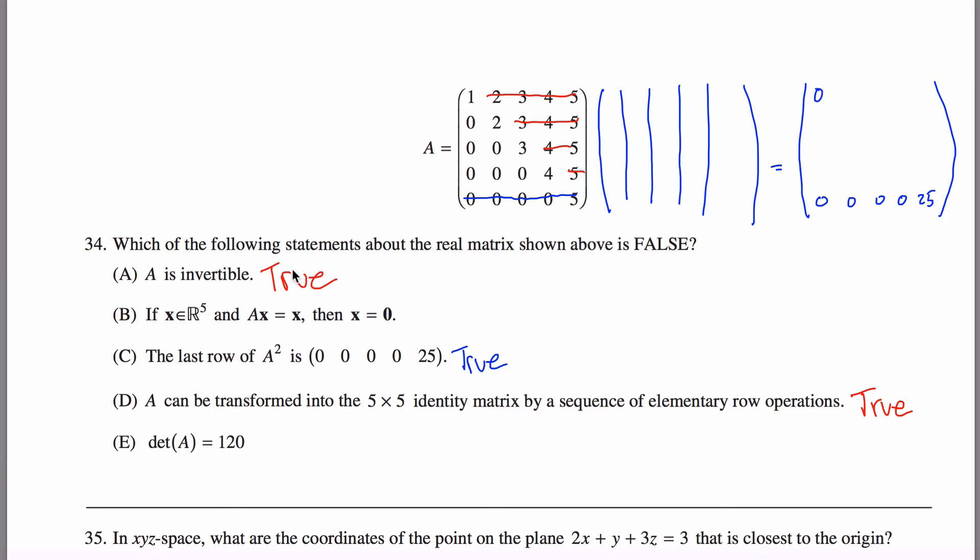Another way you can figure out that this is invertible: suppose it's not. Suppose this is false right here - it's not invertible. If it's not invertible, its determinant is zero. So if this is a false statement, then this is automatically a false statement. It asks you which one is false. This can't possibly be false because it would guarantee that this one right here is false.